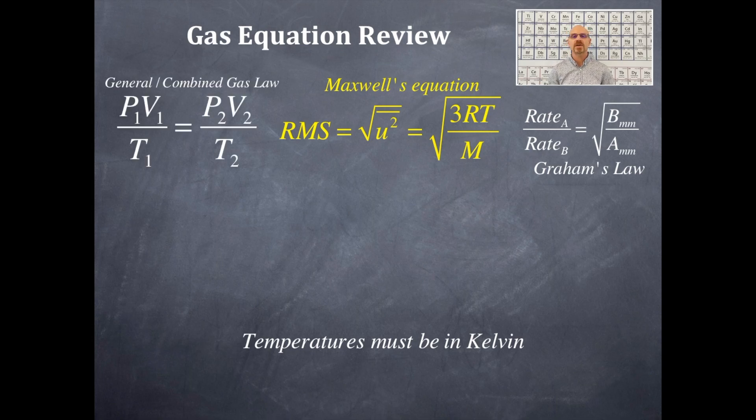The next one is the general or the combined gas law. So that is P1V1 over T1 is equal to P2V2 over T2. Again, we've got temperature in this, and those temperature units must be in Kelvin no matter what. That's an absolute. P is for pressure, V is for volume, T is for temperature. So this is comparing one gas compared to another gas at a set of pressure, volume, and temperature issues where you have changes in pressure, changes in volume, changes in temperature, or multiple examples of those.